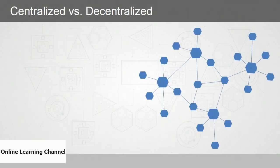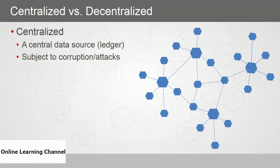Blockchain is decentralized, so let's consider the main differences between a centralized and decentralized network. In a centralized network, there is a central data source — the ledger — and everyone draws upon it, reading from and writing to it. The problem is that a central ledger is at greater risk of being corrupted or attacked, because there's only one copy of it — a single target.